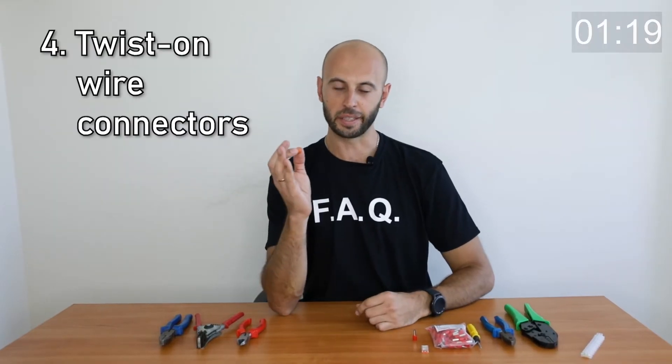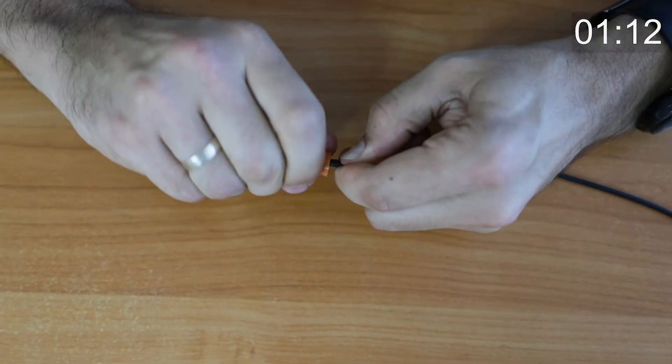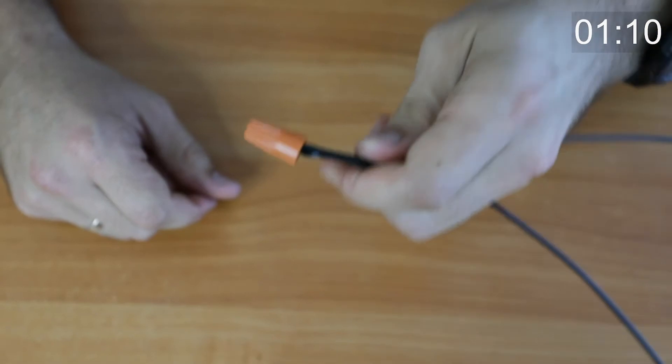Twist-on wire connectors are an advanced twist option, but just for solid wires. Select a cap for the total cross section of the connected wires, strip the wires, insert them all the way, and twist clockwise.